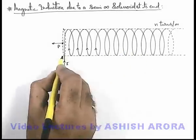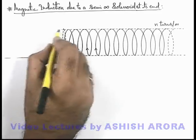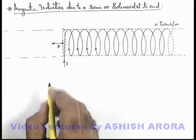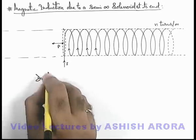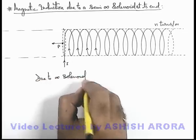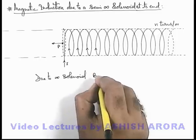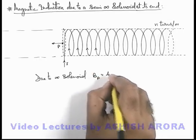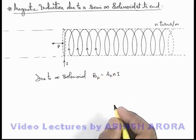Other than that, if we consider the solenoid to be infinite, then we know that due to infinite solenoid, magnetic induction at point P is given as μ₀nI, which we already calculated.